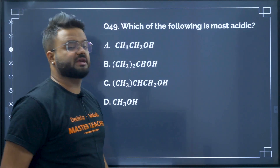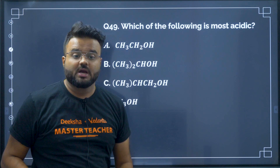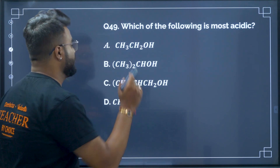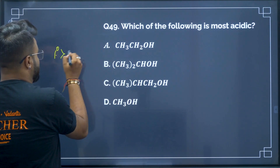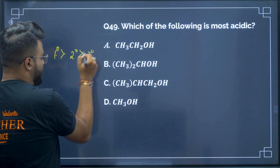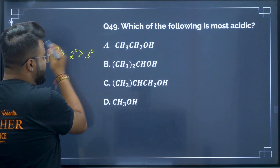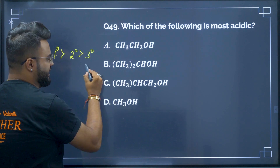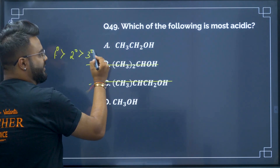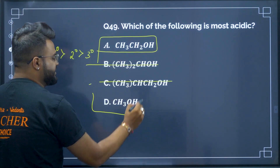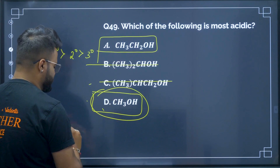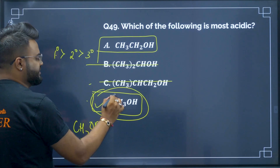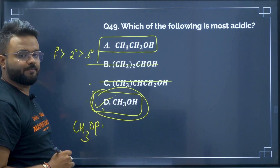Question number 49: which of the following is the most acidic alcohol? Among primary, secondary, and tertiary alcohols, primary alcohols are most acidic. Among primary alcohols, the smallest is CH3OH — that is methanol — which is the most acidic. Therefore option D will be your correct answer.